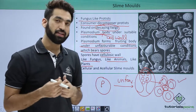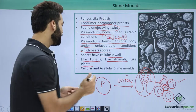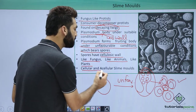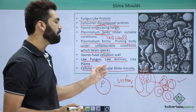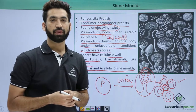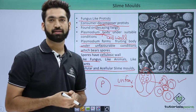There are two types of slime molds: cellular slime molds and acellular slime molds. In the next session, I'll be talking about acellular slime molds.